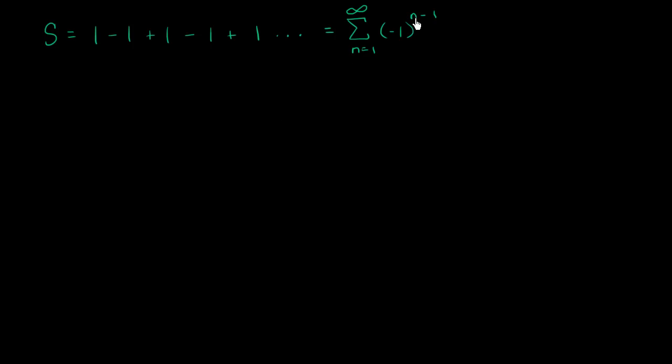Let's just verify that that works. When n is equal to 1, it's negative 1 to the 0 power, which is that. When n is equal to 2, it's 2 minus 1. It's negative 1 to the first power. That's equal to that right over there. So this is a way of writing this series.